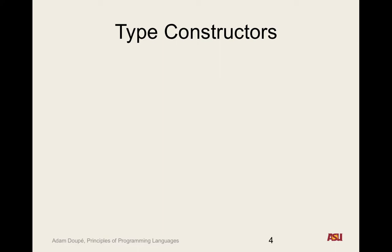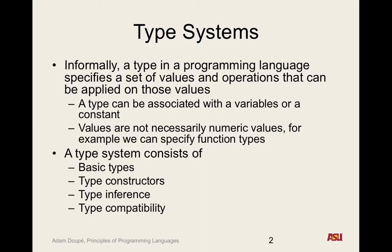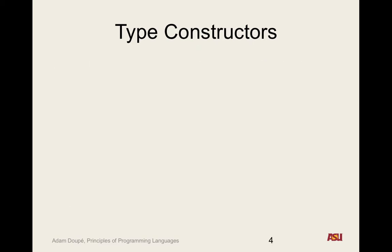What do you need on top of basic types? Type constructors — the title of this slide. The third thing is type inference, and we're going to get into that. And the fourth is type compatibility. So those are the four things that we need.